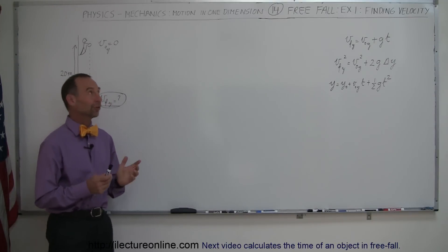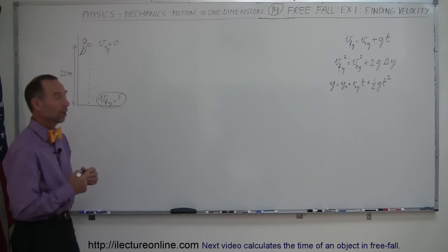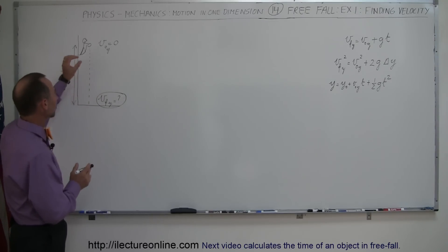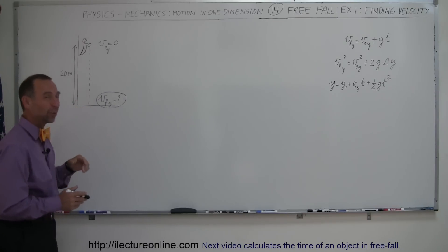Welcome to ElectronLine, and here's our first example of how to calculate a problem in one dimension dealing with free fall. We're dropping an object from a height of 20 meters and trying to figure out what the final velocity is when it hits the ground.